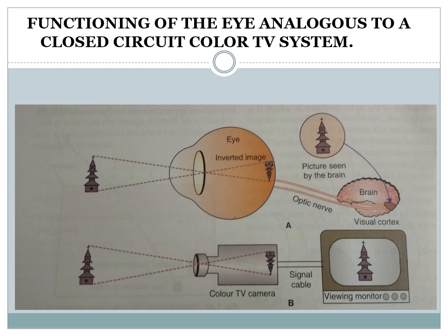This diagram shows the functioning of the eye which is like a closed circuit color TV system. Image formation in the eye occurs on the retina, then it travels through the optic nerve and goes to the brain in the visual cortex, where it is processed and you can see the picture. Likewise, in the CCTV camera the image is recorded, then through the signal cable it goes to the viewing monitor and you can see the image.